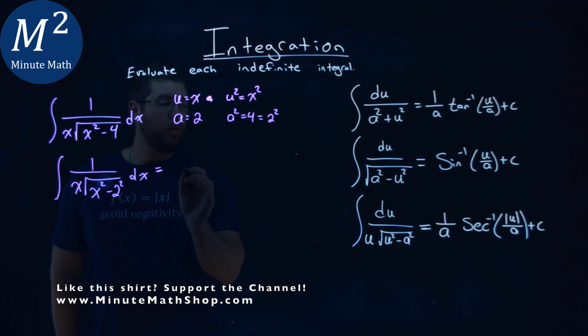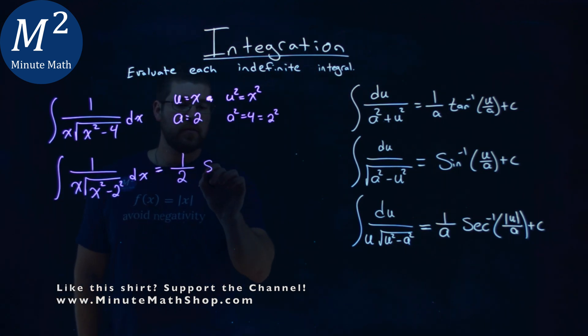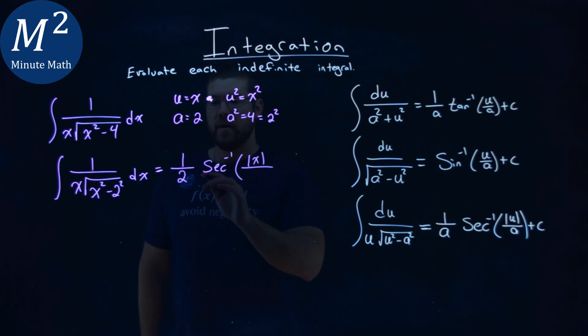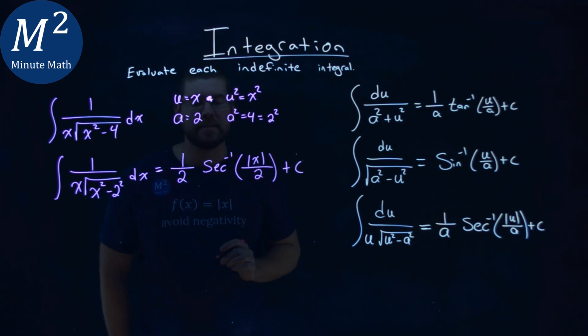So that is equal to, well, 1 over our a value. Our a value is 2 here times the arc secant of the absolute value of u, which is x here, over our a value, which is 2, plus c.